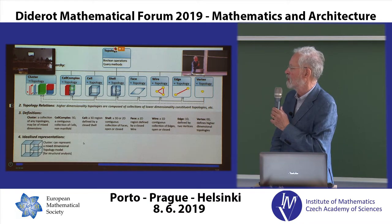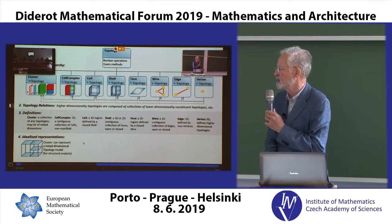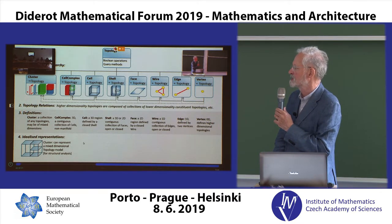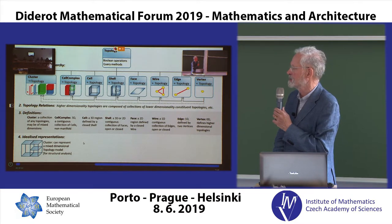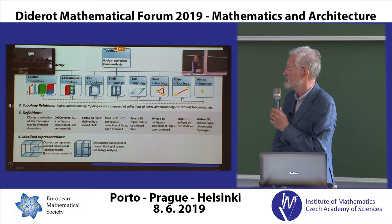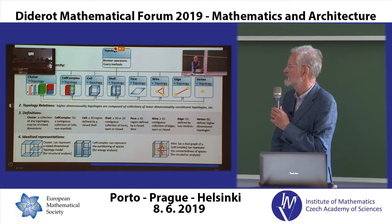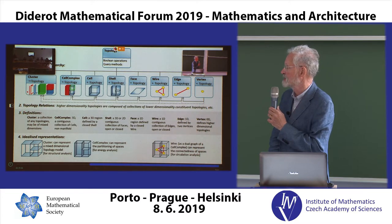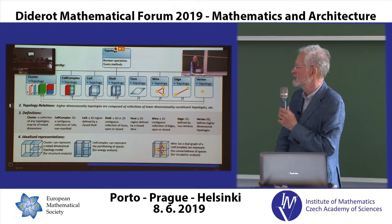One of the ideas of using topology is to create different idealized representations of the building. One would be a cluster representing mixed dimensionality topology, where we've got faces representing slabs and edges representing columns or beams. The cell complex can represent the partitioning of spaces, which is really good for energy analysis. And then we can create wires, which are essentially dual graphs, showing the connectedness of spaces.